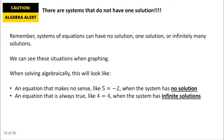Remember, when solving systems you can encounter systems that don't have exactly one solution. A system of equations can have no solution, one solution, or infinitely many solutions. When graphing, you can see this by whether the lines cross, don't intersect, or are the same line. When solving algebraically, it looks a little different: if you correctly perform all steps and get a false statement like 5 equals negative 2, the system has no solution. If you get a statement that's always true, like 4 equals 4, the system has infinitely many solutions.